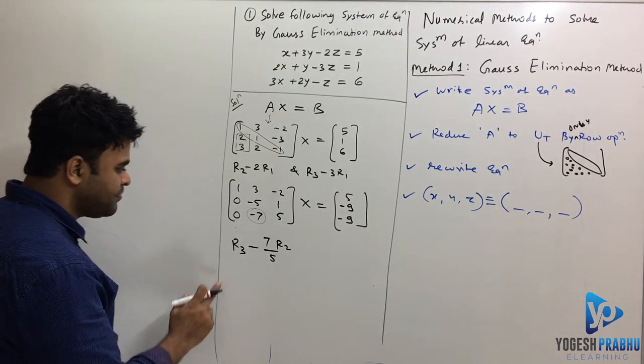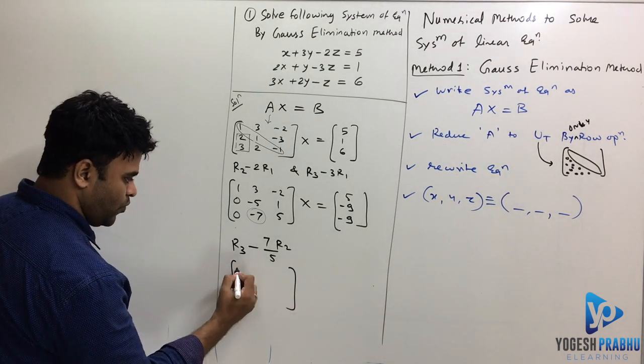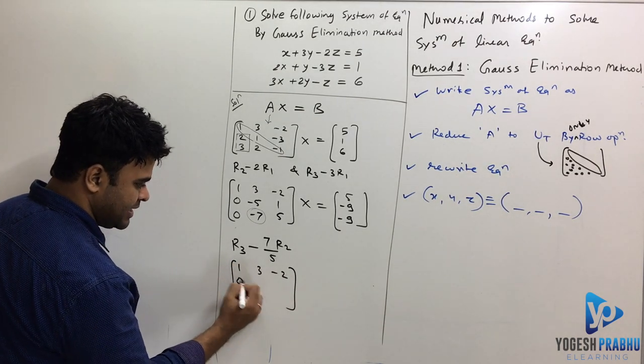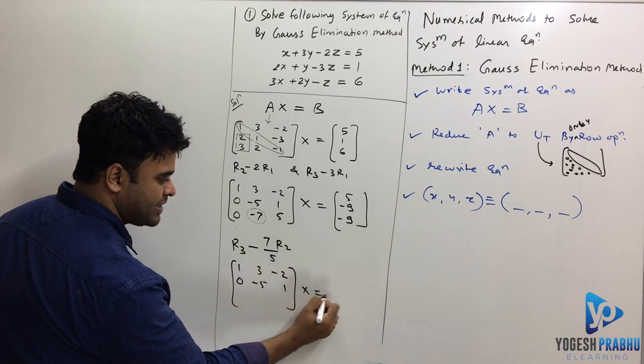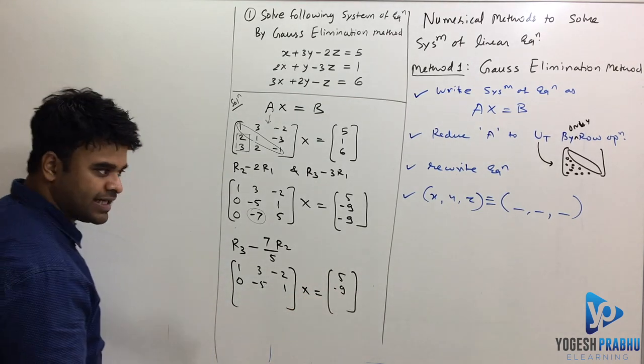If I do this operation, I will get this as well. 1, 3, minus 2 remains as it is. 0, minus 5, 1, x, right hand side 5, minus 9, all stays as it is.